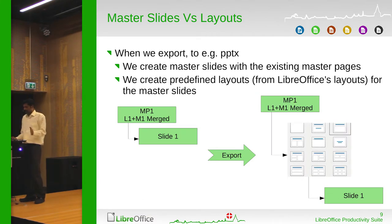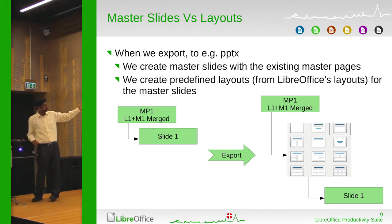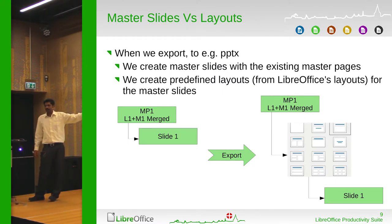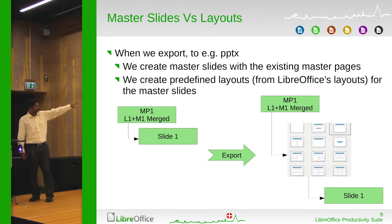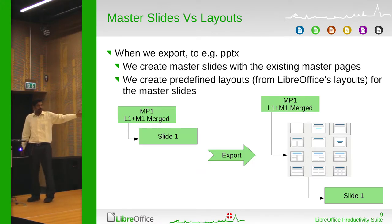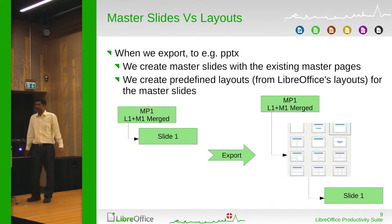So what do we do when we export this? When we actually export, we don't have the layout information anymore. We have the merged master page and the standard 12 slide layouts that are directly exported — it's kind of hard-coded. If you have two master pages in Impress, you get two sets of those — 12 plus 12, giving 24 layouts which are nothing but copies. So when you export, you get double the layouts.